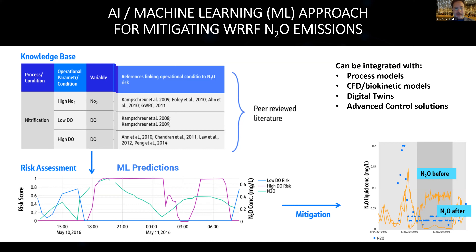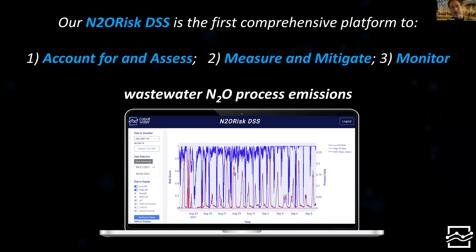We're also using machine learning to predict what the actual N2O emissions are. This is a data-driven approach making predictions based on the data — a sort of black box — but because we couple it with knowledge-based AI, we can see why the predicted N2O is going up or down and what we need to do to bring it back down. Coupling knowledge-based AI with machine learning essentially removes the black box and provides a powerful combination of AI tools for accounting, assessing, reducing, and monitoring N2O.